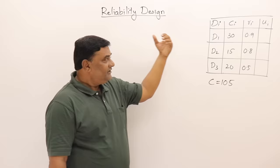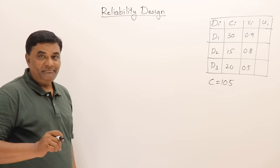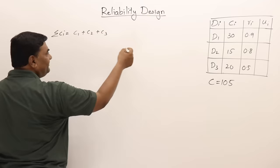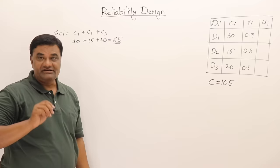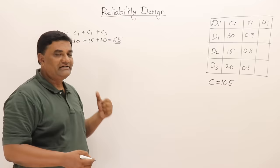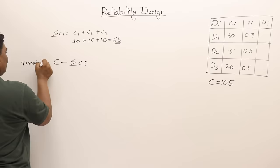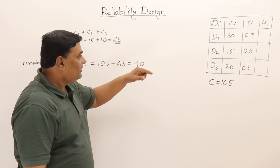We are setting up a system by taking multiple copies, so we must take at least one copy of each device. The minimum cost is c1 + c2 + c3 = 30 + 15 + 20 = 65 dollars. The total budget C is given as 105, so the remaining amount is 105 − 65 = 40 dollars. With 40 dollars remaining, I need to determine how many additional copies of each device I can purchase.